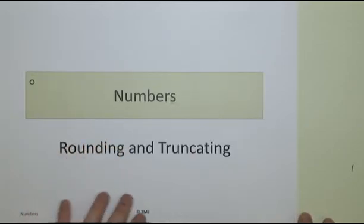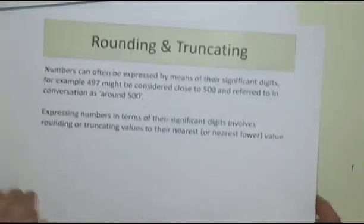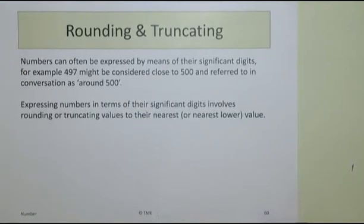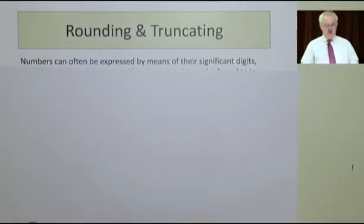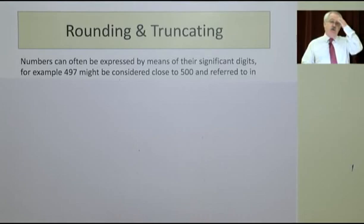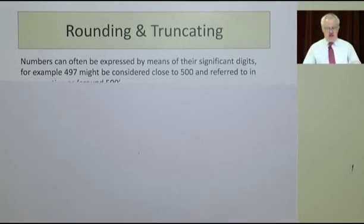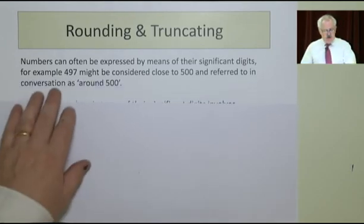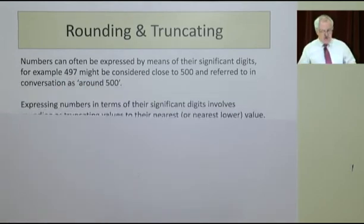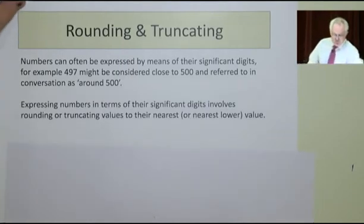We now look at the area of numbers, particularly truncating and rounding. Numbers can often be expressed close to their significant digits. For example, if asked how much money you have, you might say about a tenner or a fiver, not 5 euros and 11 cents. So 497 could be something around 500. We're used to that, and it involves bringing numbers to their significant digits.